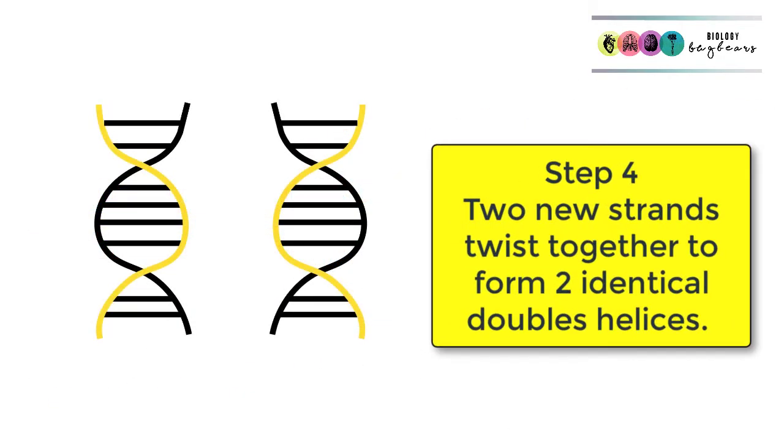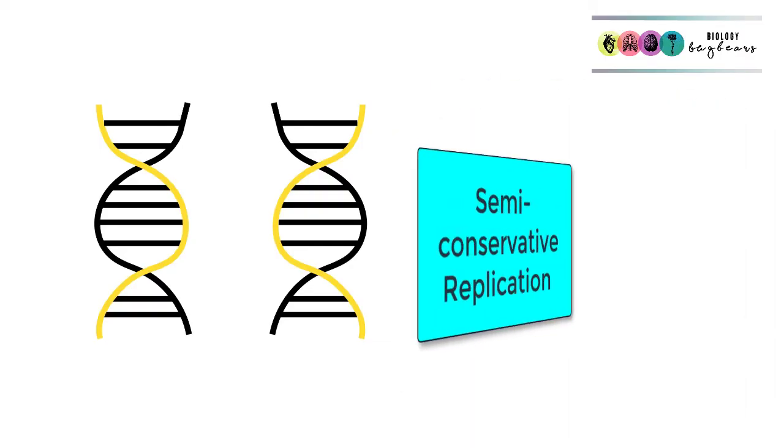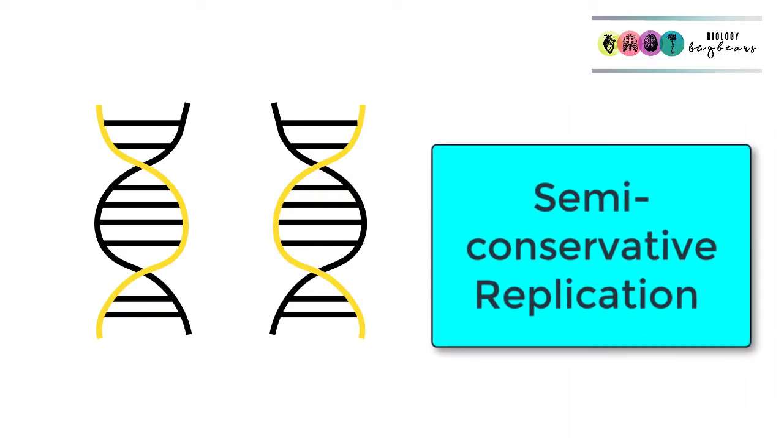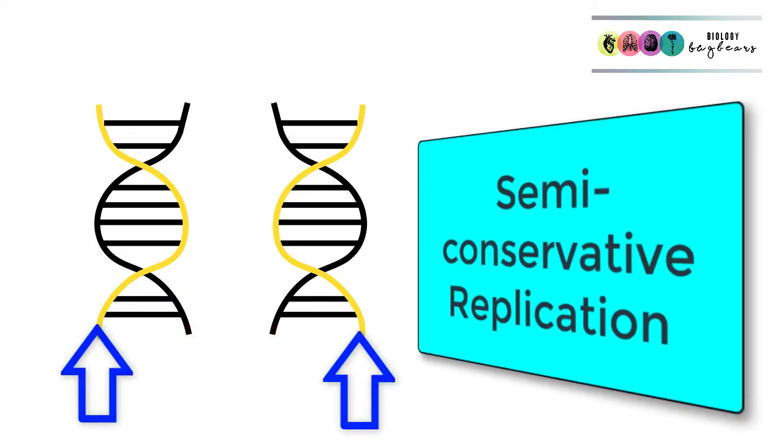Step number four, the two new strands twist together to form two identical double helices. When you look at the two brand new double helices, you can see that they both have one of the original strands from the original DNA molecule, but they also have one brand new strand, so it's called semi-conservative replication for that reason.